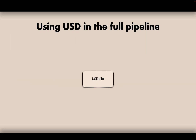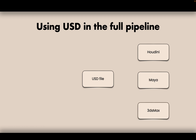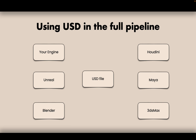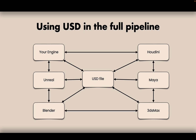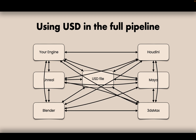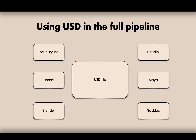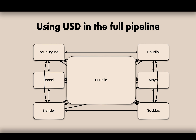When you use USD in a full pipeline, the idea is that if you have Houdini, Maya, 3ds Max, Blender, Unreal, or your engine — whatever third-party or in-house tool you're using — you could use USD in all these editors. Right now it's not quite there yet, but you can also save to that USD file. Those USD files can be opened and edited in all these DCCs and moved between them. If they're all using USD, you can move between all these DCCs with the exact same file and maintain all the data. This one USD file is always the source of truth.